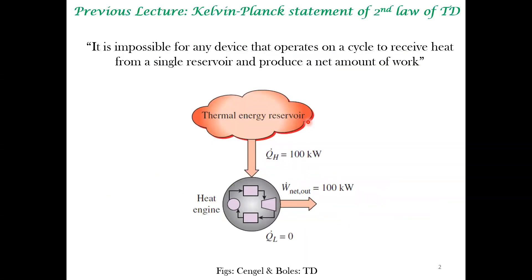In the previous lecture, we used heat engines to demonstrate a version of the second law of thermodynamics, which is the Kelvin-Planck statement: it is impossible for any device that operates on a cycle to receive heat from a single reservoir and produce net work — meaning all heat is converted to work without any rejection of heat to the cold reservoir. Please note this is a negative statement. We are not proving something; we are proving that it is impossible. There is no way to prove a negative statement. The only proof, so to speak, is that no experiment has disproved this negative statement.